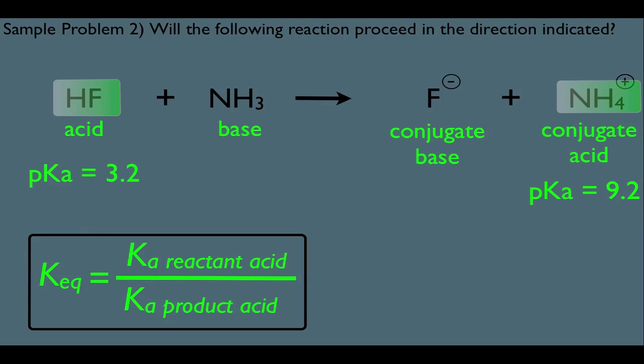Let me show you how this works. Look at HF. He has a pKa of 3.2. That means his Ka would be 10 to the negative 3.2. All I'm doing to calculate the Ka from the pKa is taking the inverse log of 3.2, because p means the negative log of. The conjugate acid's Ka value would be 10 to the negative 9.2. Let's plug them into our formula: Keq equals Ka of the reactant acid divided by Ka of product acid.